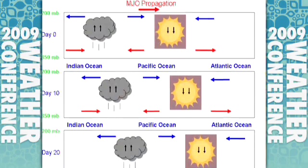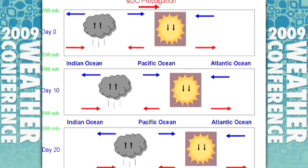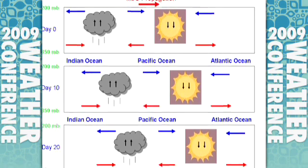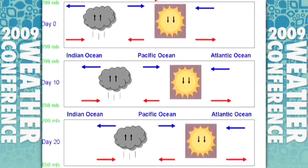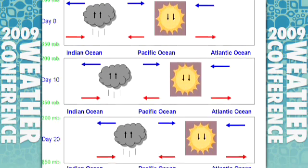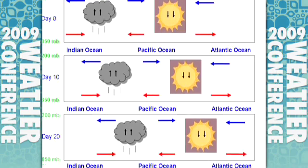it tends to enhance and then suppress thunderstorm activity. When the Madden-Julian Oscillation is concentrated in the Indian Ocean, it tends to mean less vertical shear in the Atlantic and more vertical motion — so basically more likely for storms to form and especially to intensify and become hurricanes and major hurricanes.